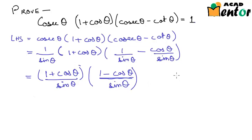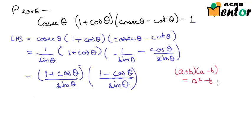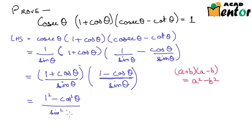Looking at the numerator carefully, the terms are in the form (a + b)(a - b) where a = 1 and b = cos θ. We know that (a + b)(a - b) = a² - b², so the numerator becomes 1² - cos²θ. In the denominator, sin θ × sin θ gives sin²θ.